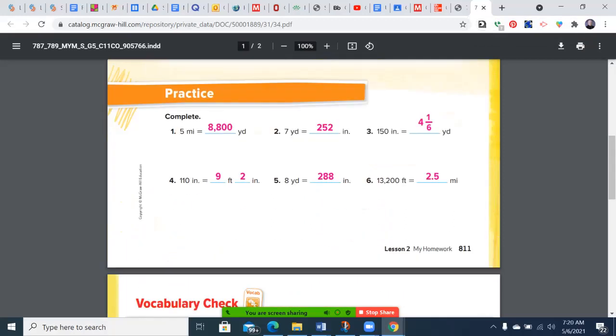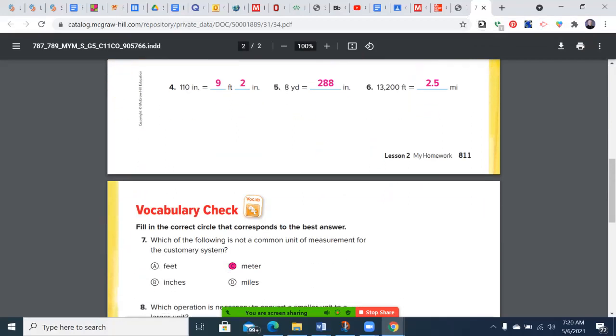Miles to yards: multiply by 1,760. Yards to inches: multiply by 36. Inches to yards: divide by 36. Inches to feet: divide by 12. Feet to miles: divide by 5,280.